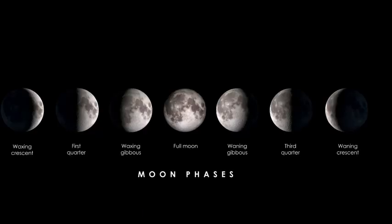The moon appears to change its shape as it moves around the earth. This is because of its orbit — its journey around our planet. So, dear children, when you look up at the night sky, you can see these different phases of the moon. It's like a cosmic clock, always changing. It's pretty cool, right?